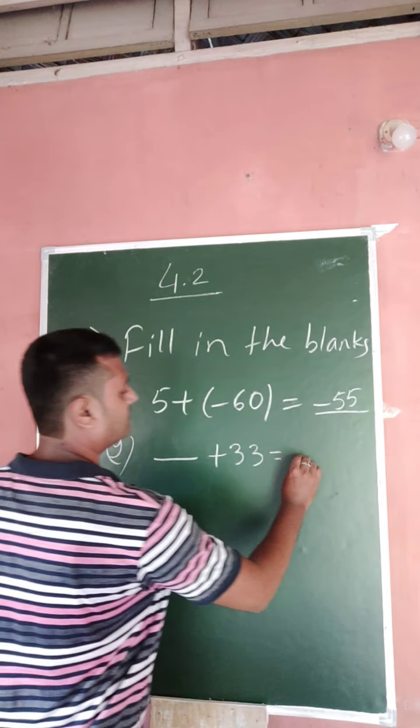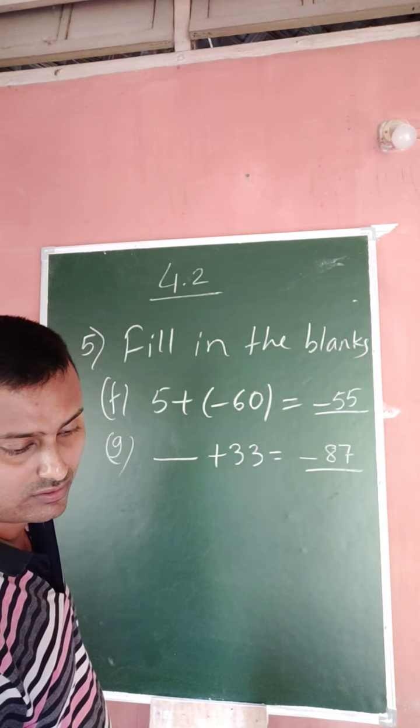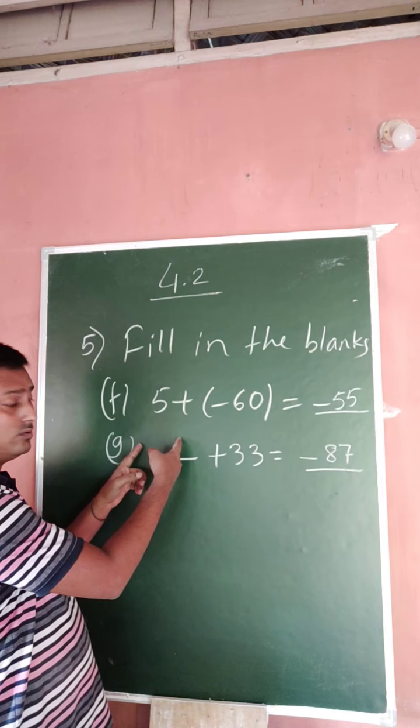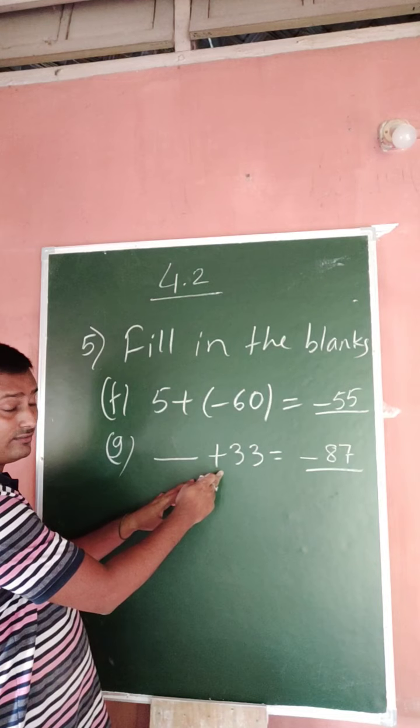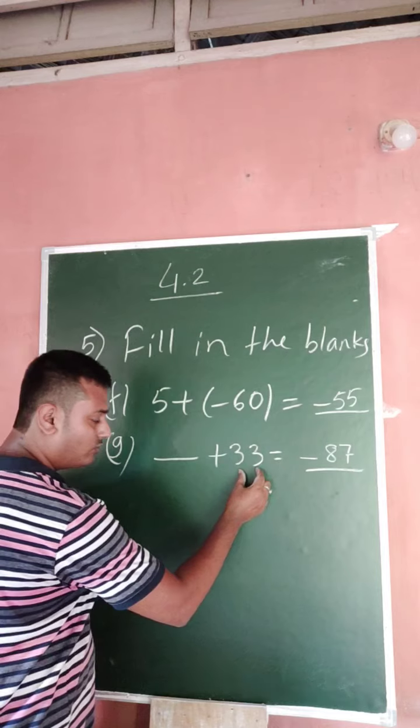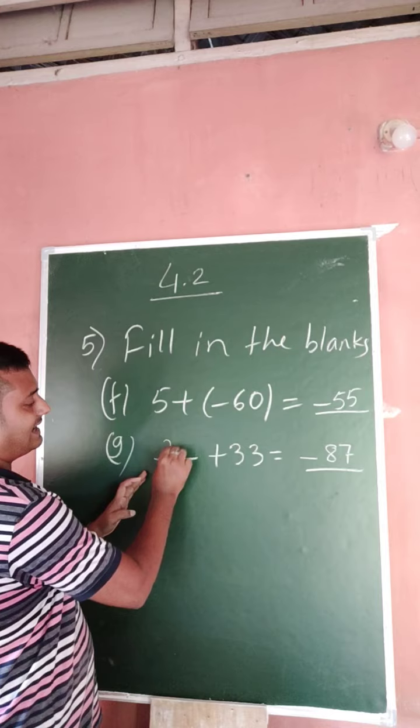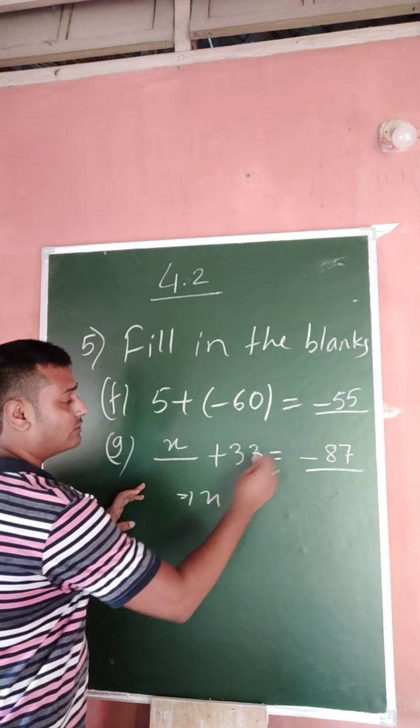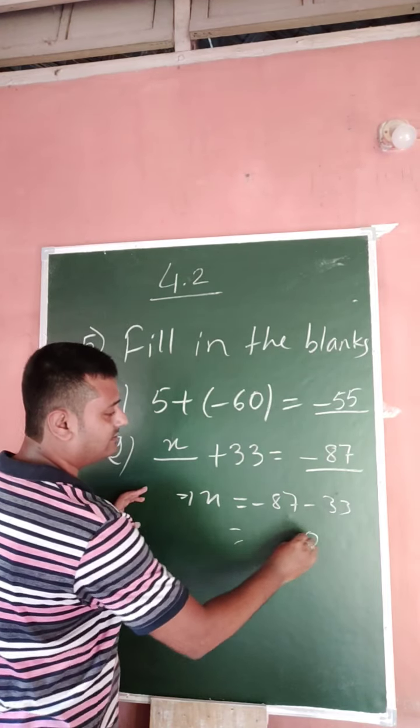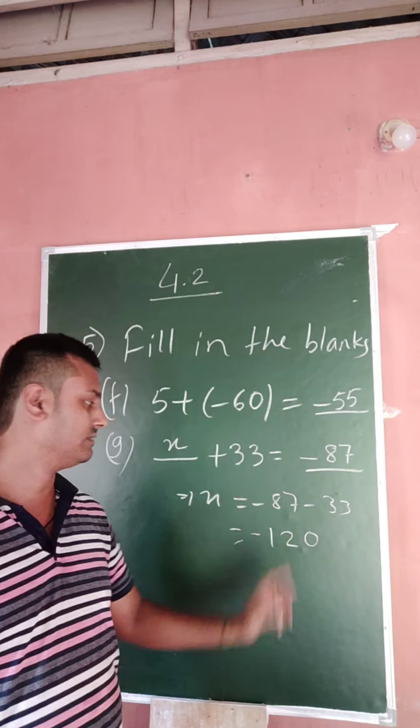So that means this is equal to minus 63. So that means this is the bigger negative number. Then you have plus 33, then become minus 87. That means if you want to find, very easy, this one is suppose X. X goes to that side, so minus 87 minus 33, that is minus 120.